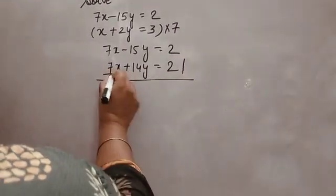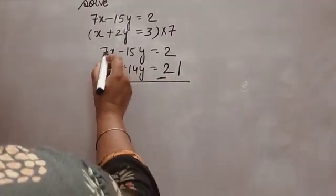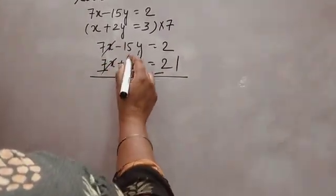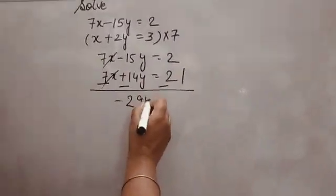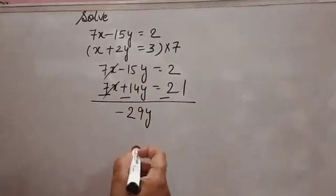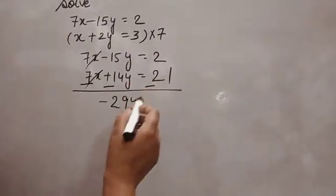Then you will subtract. So 7x minus 7x cancel. Minus 15 minus 14 minus 29y. Because both are negative. And if subtracting, the sign is changing of the lower number.